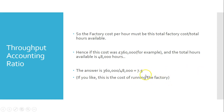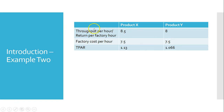So the throughput per hour — return per factory hour — is 8.5 for product X and 8 for product Y. The factory cost per hour is 7.5. Comparing these, the throughput accounting ratio is 1.13 for product X and 1.067 for product Y. For every factory hour invested in product X you get 1.13, and for every hour in product Y you get 1.067.